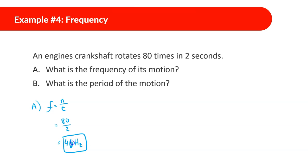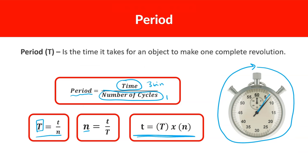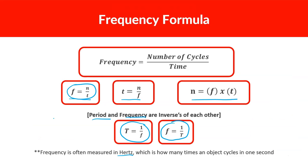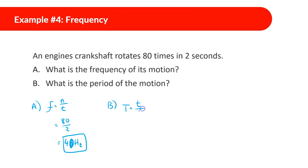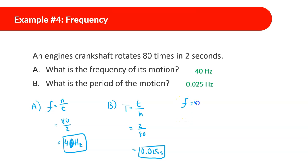What is the period of that crankshaft? We can use period equals time divided by number of cycles: 2 seconds divided by 80 equals 0.025 seconds. Alternatively, since frequency is 40 hertz and period is the inverse of frequency, period equals 1 divided by 40, which also gives 0.025 seconds.